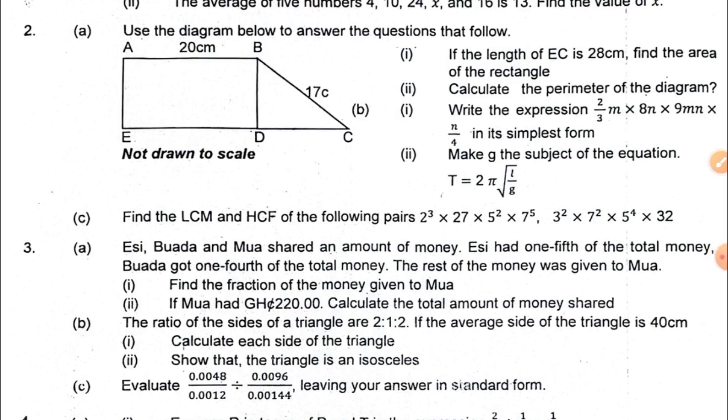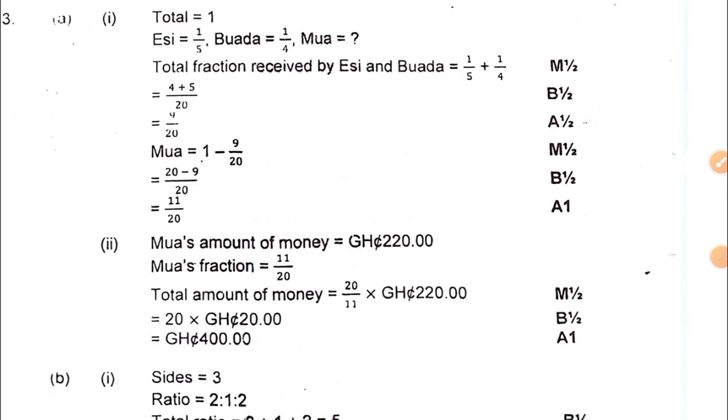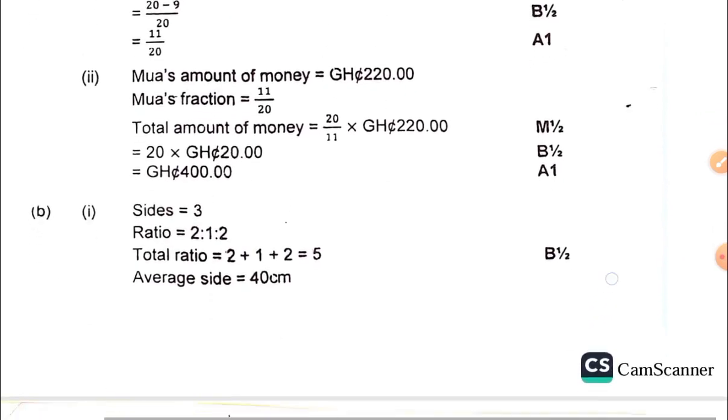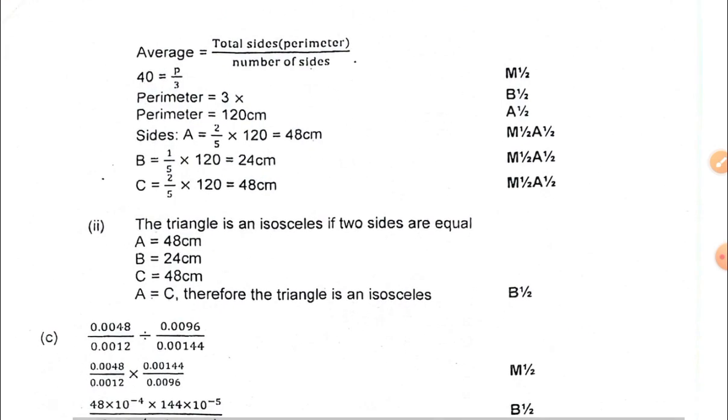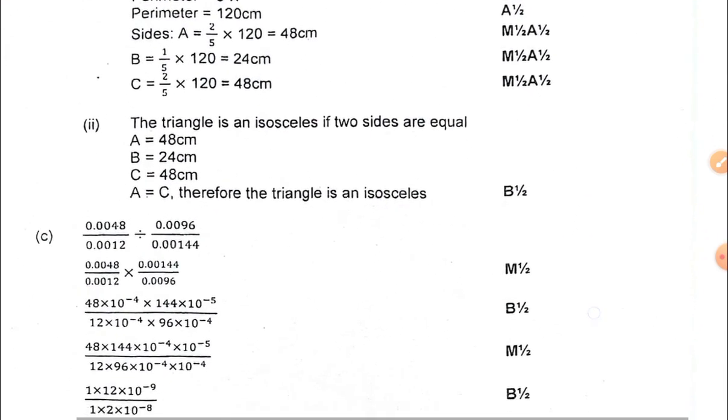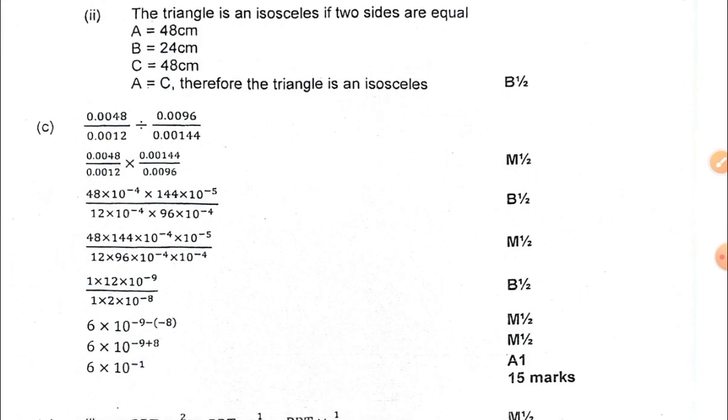Question three, part A has to do with word problems involving fractions. Part B has to do with triangles and ratio, ensuring that a triangle is an isosceles triangle. Part C has to do with standard form. Question three B and part C which has to do with finding the standard form.